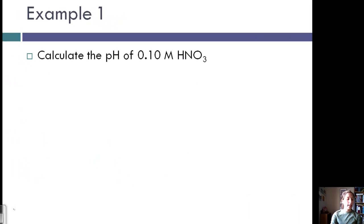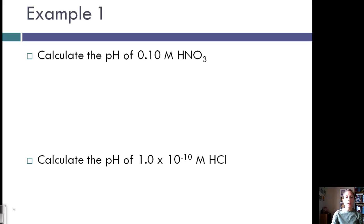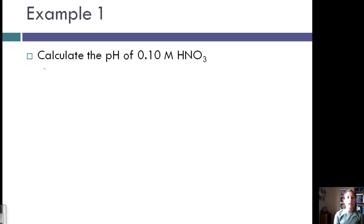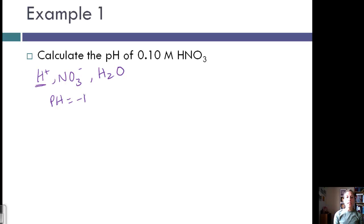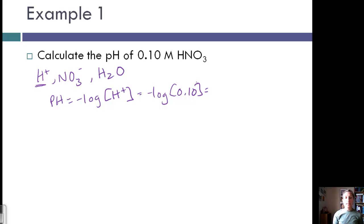Let's look at an example: calculating the pH of one molar of HNO₃. Our major species are H⁺, NO₃⁻, and H₂O. Since this is a strong acid, the concentration of H⁺ from the HNO₃ is going to be much more important than from H₂O. So pH equals negative log of the H⁺ concentration, which equals negative log of 0.1, and negative log of 0.1 is equal to 1.